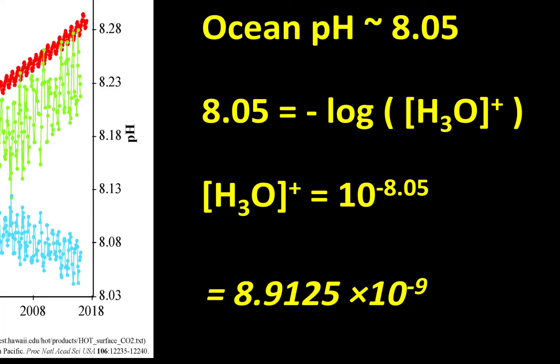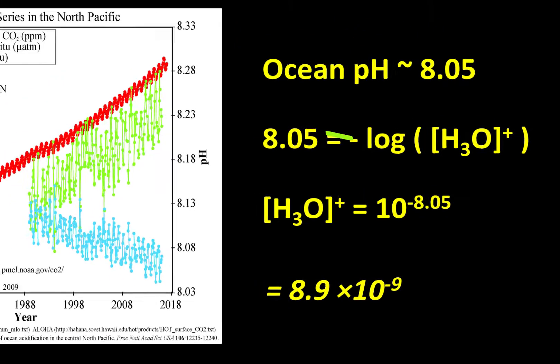If you account for the degree of precision expressed by a pH of 8.05, this should actually be written as 8.9 × 10⁻⁹. The pH of 8.05 actually reports two significant figures — we'll talk about sig figs in just a minute.